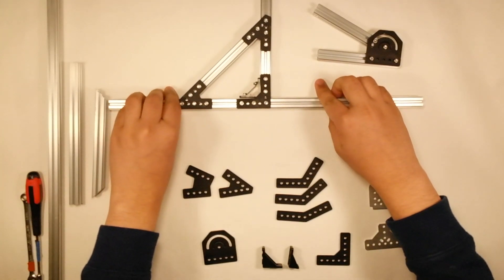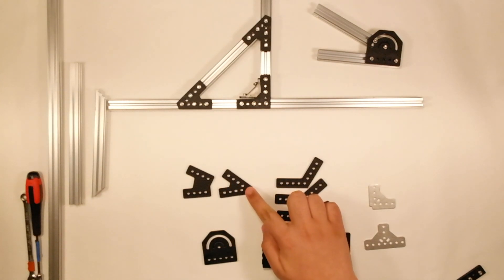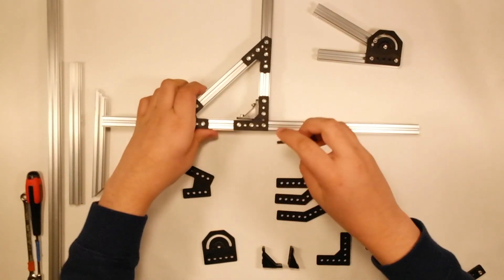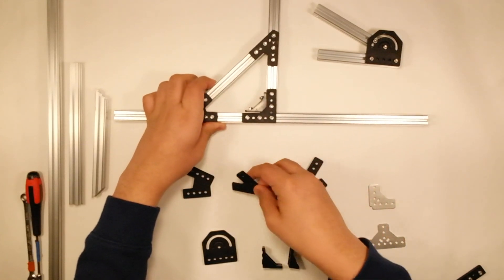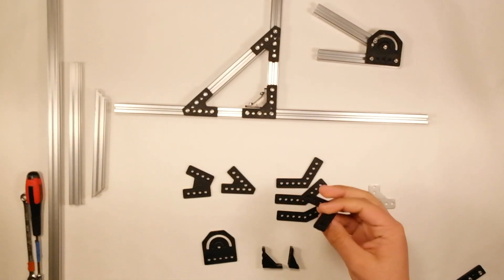There are different brackets in order to put two pieces of REV extrusion together. These are brackets that go on the sides of your extrusion, for example here, that are less than 90 degrees. There are also brackets like this that are greater than 90 degrees, as well as one that is 90 degrees, for example, right here.